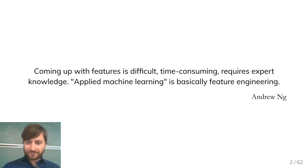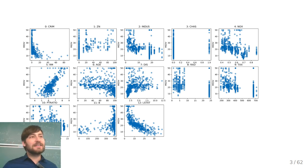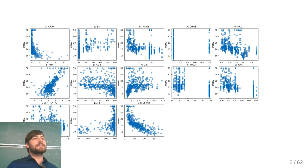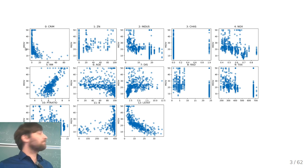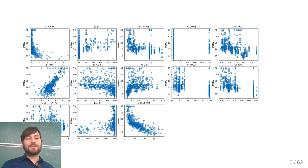There's one dataset I want to start working with as an example — it's actually a quite nice toy dataset. It's the Boston housing dataset, where the goal is to predict the prices of houses in Boston neighborhoods. This plot shows all 13 features plotted against the target, which is the price — median value. The features include crime rate, industrialization, whether it's on the Charles River, nitrogen dioxide levels, age of the house, number of rooms, and so on.